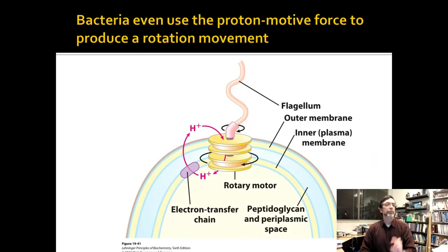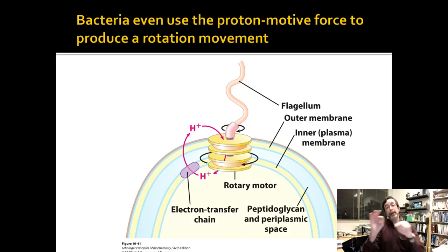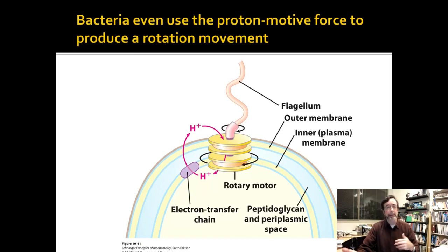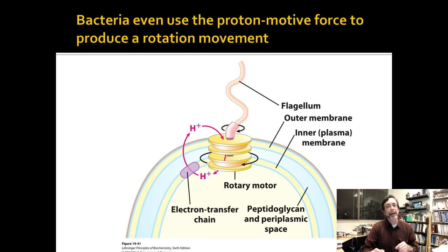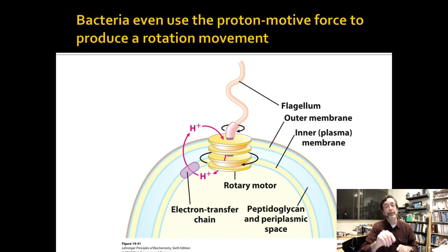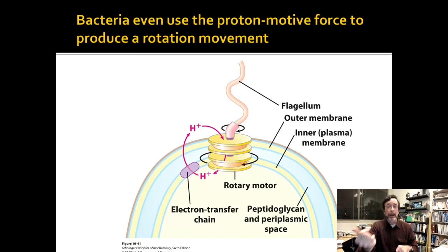What's interesting is what bacteria can sometimes use the proton motive force for, because if they have these two complexes, they basically turn electrons into a proton gradient. And then you can use that to catalyze rotation. The rotation doesn't have to make ATP — sometimes the rotation can just be rotation. Here's an example of how a bacterium can use that rotation to literally rotate a flagellum.